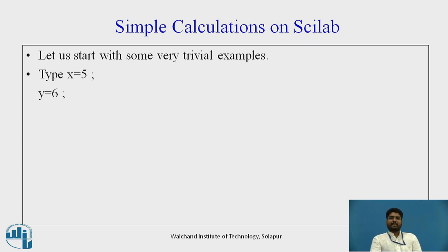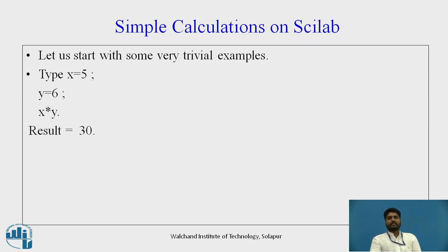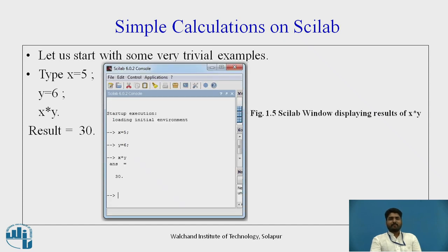Suppose we type x = 5 followed by a semicolon and press enter, then y = 6 followed by a semicolon and press enter. The value 5 is assigned to x and the value 6 is assigned to y. Then if we multiply x and y, we just need to type x asterisk y and we get the result as 30. This operation is performed on Scilab and the image of that is shown in the figure.